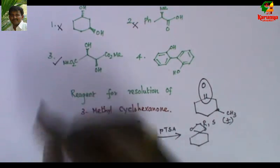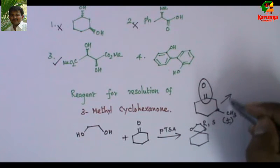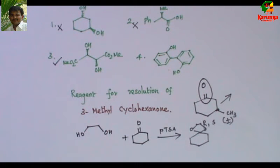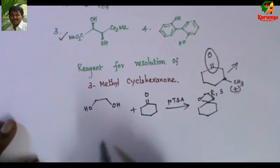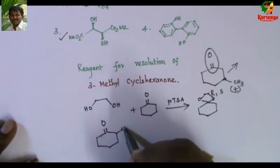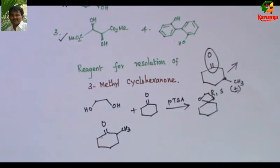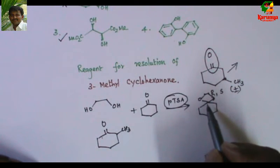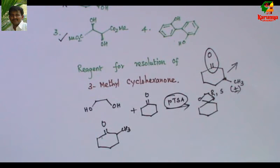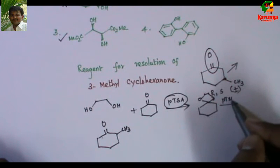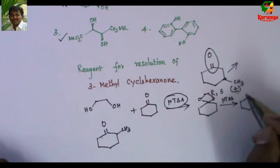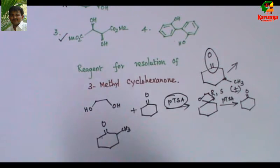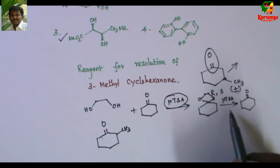The phenol option is not a 1,2-diol; it cannot form a ketal, so it is ruled out. The answer is option 3. Note that the problem gives 3-methylcyclohexanone, not 2-methylcyclohexanone. The reason is that protection and deprotection of the ketone is carried out in the presence of acid — to deprotect, you add para-toluenesulfonic acid and you get back the ketone. So both protection and deprotection require acid.